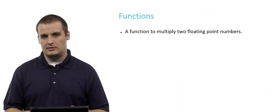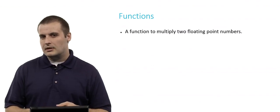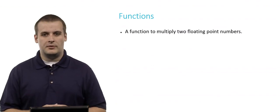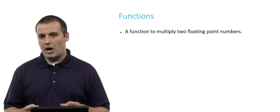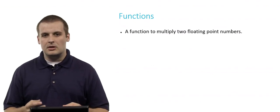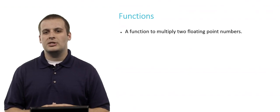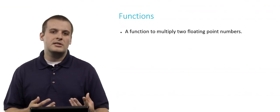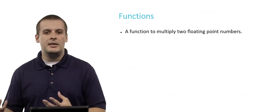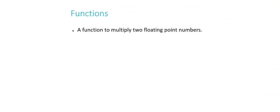Why don't you take a second to think about this one. How would we write a function declaration for a function that multiplies two floating point numbers? What would the return type be? What would the meaningful name be? What would the inputs be? I'd recommend that you pause the video and think about what this function declaration would look like.